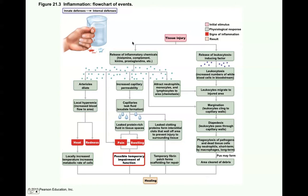You might have heard of antihistamines in the respiratory system. When histamine is released, it can cause more of an inflammatory response, and antihistamines fight the activity of this to reduce the swelling and mucus production. These are inflammatory chemicals. This tissue injury will also release leukocytosis-inducing factor. Leukocytosis means it's drawing white blood cells — leukocytes — to that area.